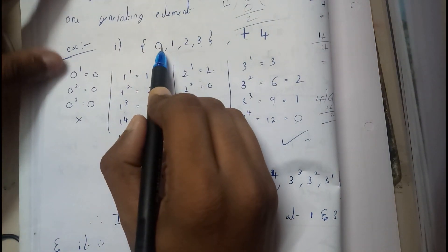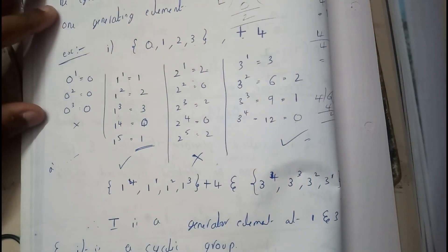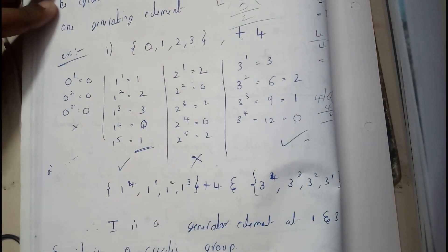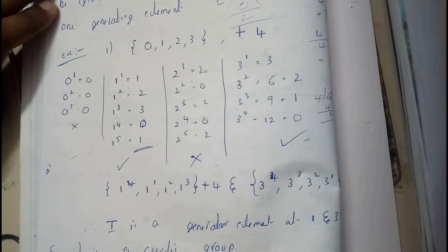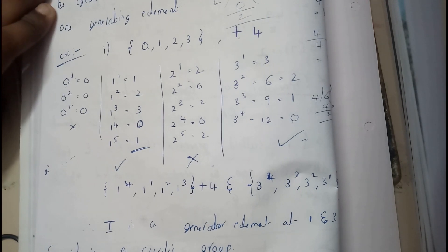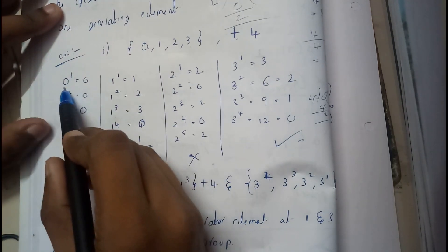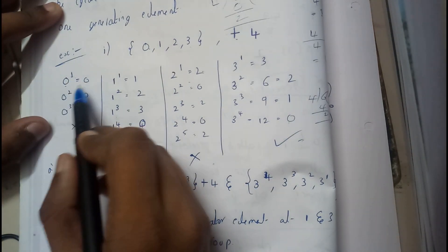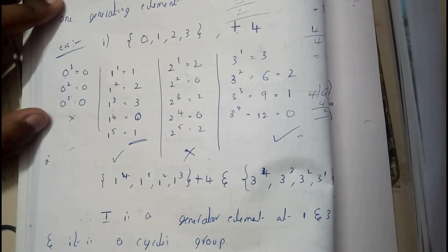We compute a^1, a^2, a^3, a^4 for each element. Starting with 0: 0^1 = 0, 0^2 = 0+0 = 0, 0^3 = 0+0+0 mod 4 = 0. All powers of 0 give only 0 — it just repeats, so 0 does not generate all elements of the group.